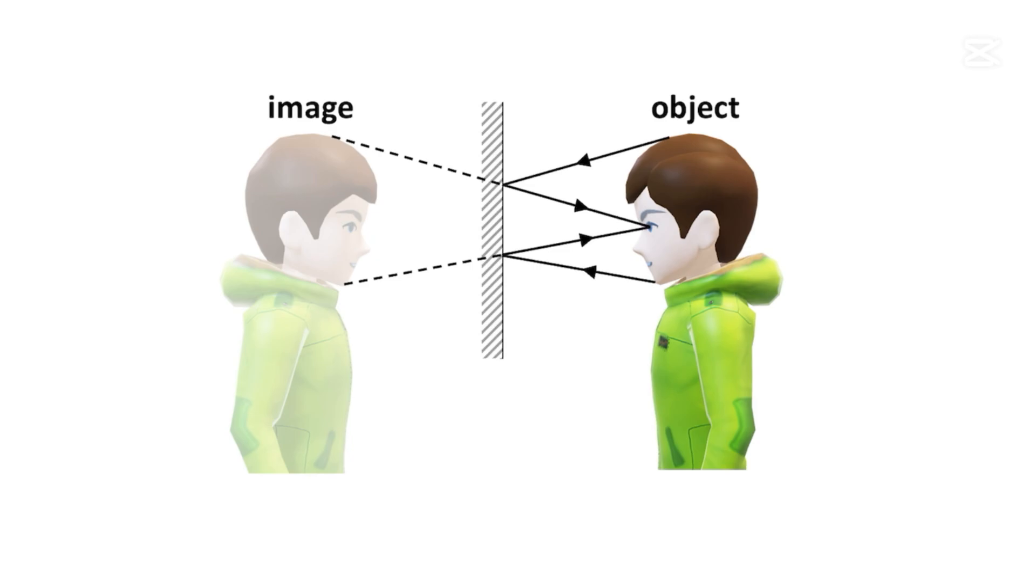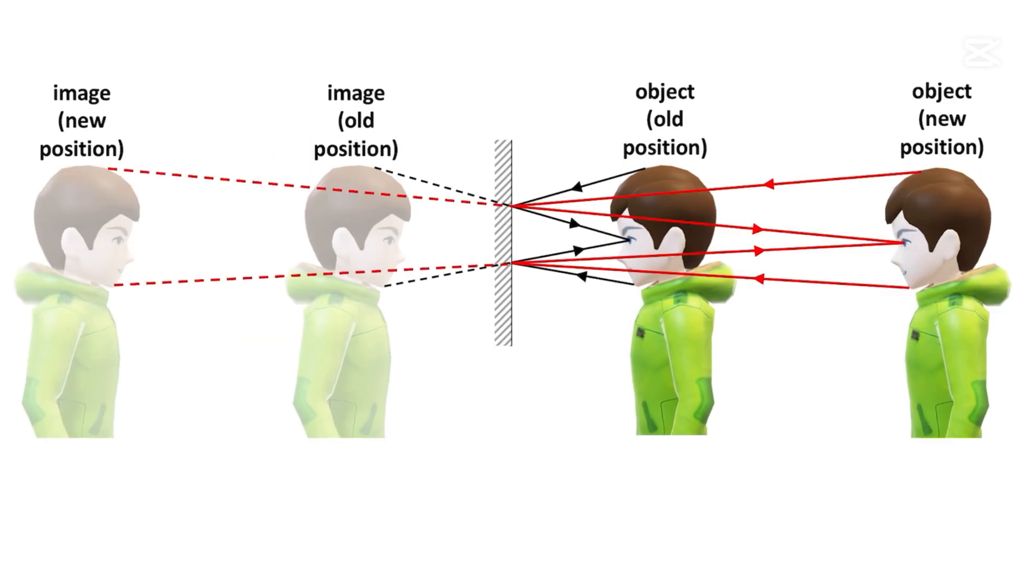Now what happens when he moves back? We do the same. The light rays going from the image, the top of his head to his eye and then from his chin to his eye, and then we join it back to the object.